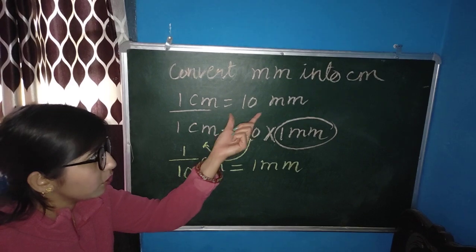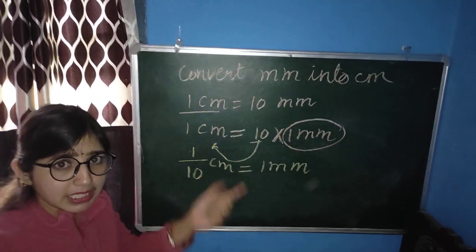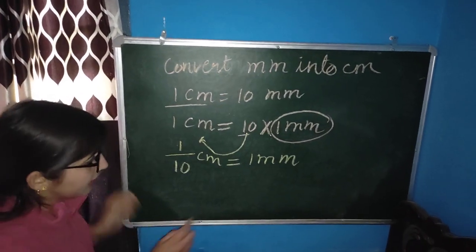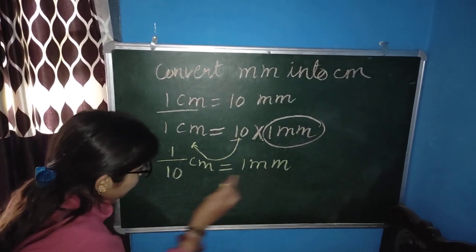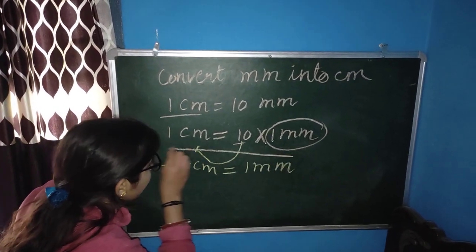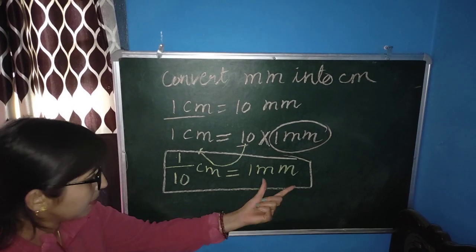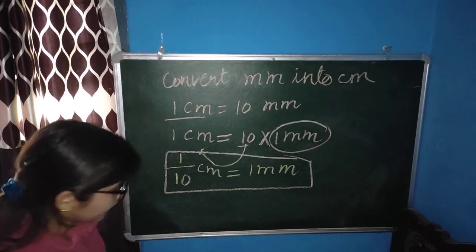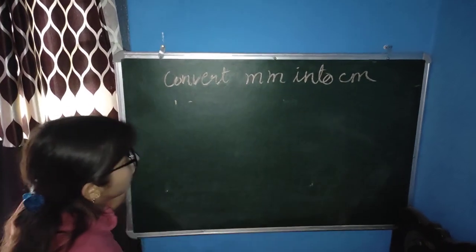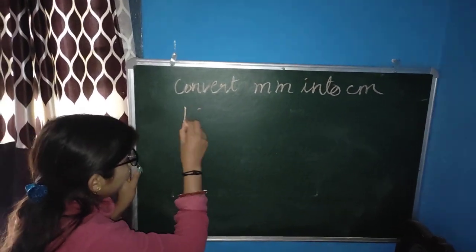Since 1 cm is equal to 10 mm, 1 mm will be the 10th part of a cm, so we write: 1 mm is equal to 1 by 10 cm. You need to learn and remember this formula: 1 mm is equal to 1 by 10 cm.